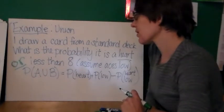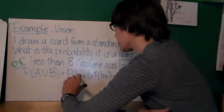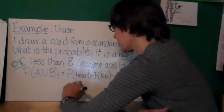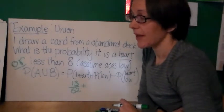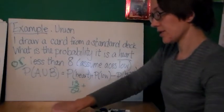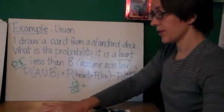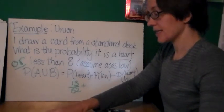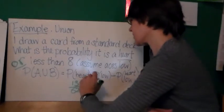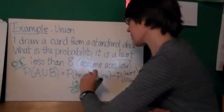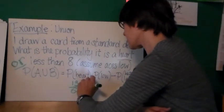So, probability of it being a heart or less than 8 is, first of all, the probability that the card is a heart, which is there's 13 hearts in a 52 card deck, plus the probability that it's a low card. My low cards are ACEs, 2, 3, 4, 5, 6, 7. Those are the cards less than 8. So there's 7 of those times 4 different suits is 28.